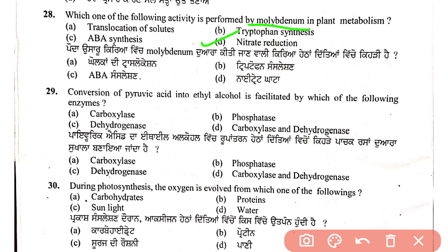Question 29: conversion of pyruvic acid into ethyl alcohol is facilitated by which enzyme? The enzymes involved are pyruvate decarboxylase and alcohol dehydrogenase — carboxylase and dehydrogenase together convert pyruvic acid into ethyl alcohol.